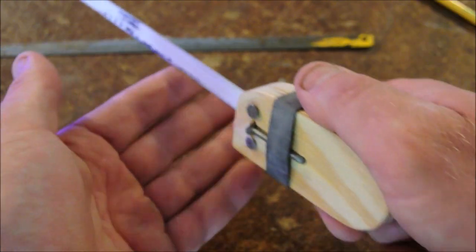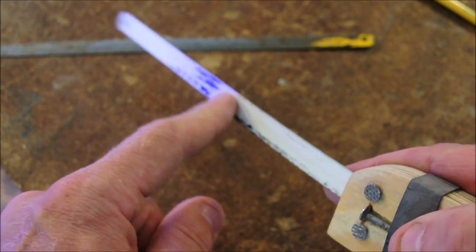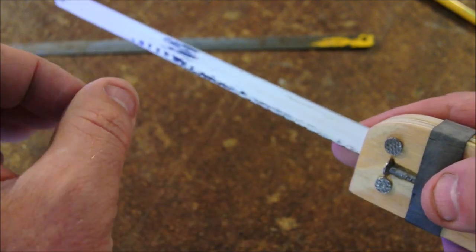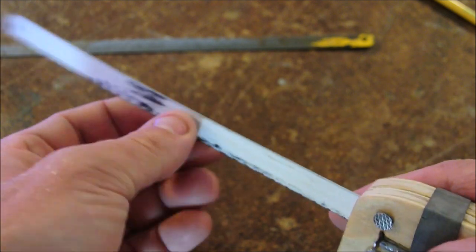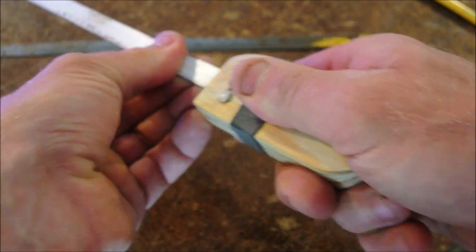You want to set this up so that it cuts on the pull stroke because if you push the blade bends. Some of these can be fragile or rather hard enough to be brittle and they can snap. It's important that you use this tool only on the pull stroke.